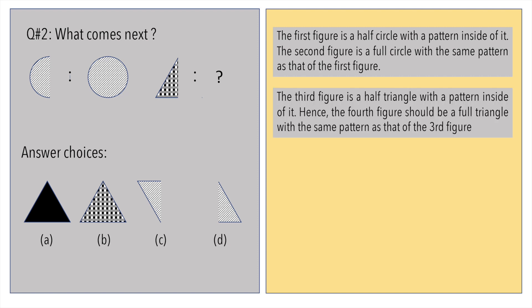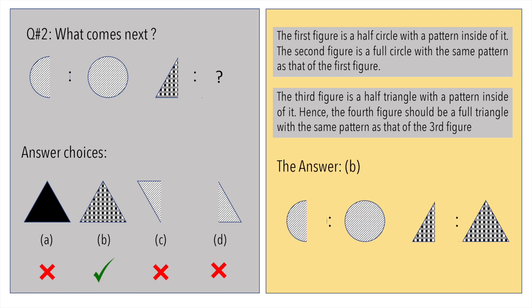The third figure is a half triangle with its own pattern inside of it. Hence, logically, the fourth figure should be a full triangle that has the same pattern as that of the third figure. The answer is option B.